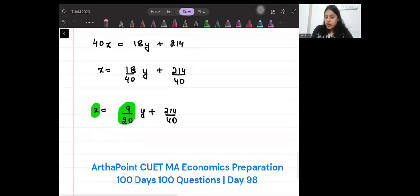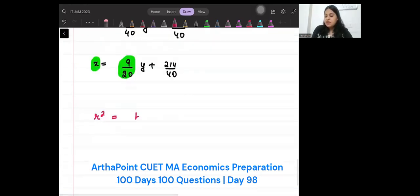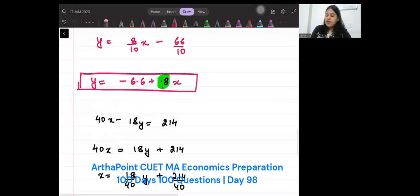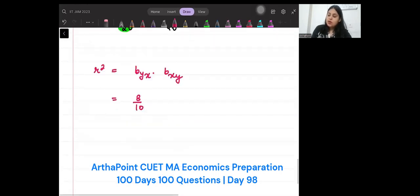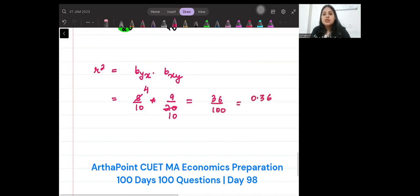Now we know that R square can be written as BYX into BXY. So this is BYX, this is 8 by 10, that means 4 by 5. And this is 9 by 20. So what will I get? 8 by 10 into 9 by 20. So I will get the answer as, let's just solve this. 36 by 100, so 0.36.